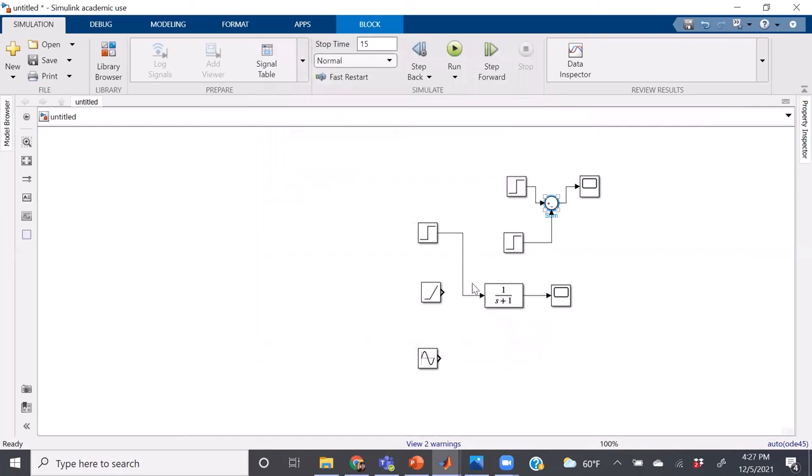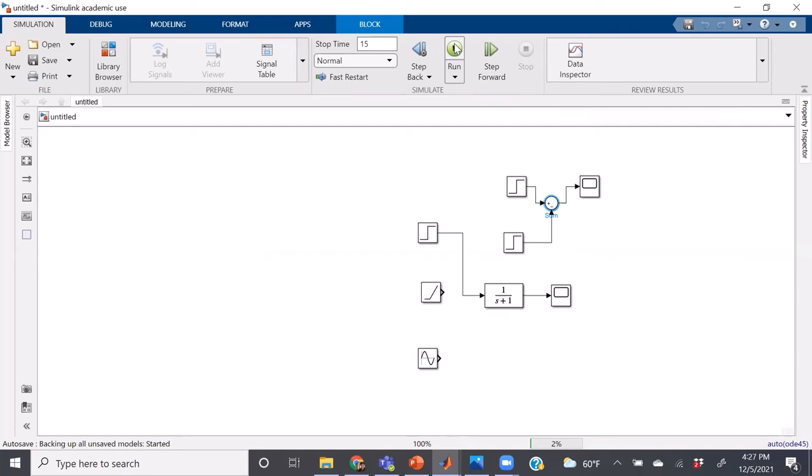Let's hit run. And there you go. That second step change, since we subtracted it from the first, it brought back that 5 to 0 at time 10, and gave us the rectangular pulse that we were wanting.